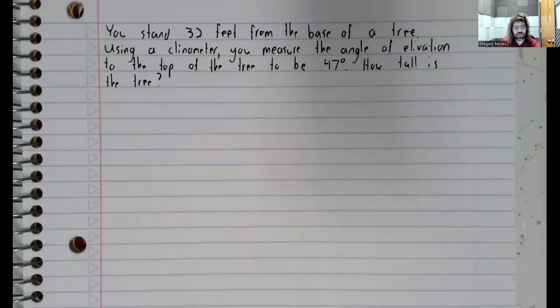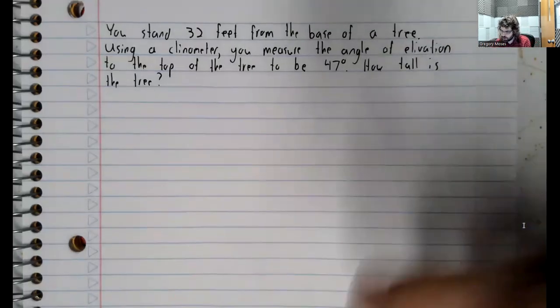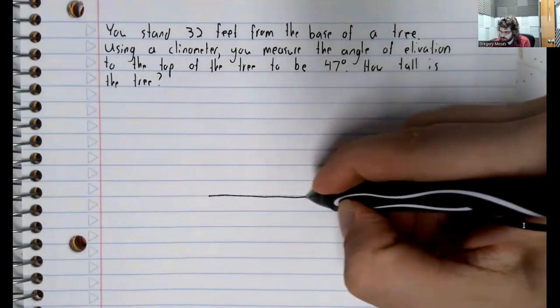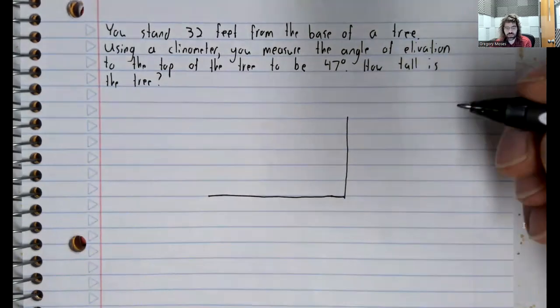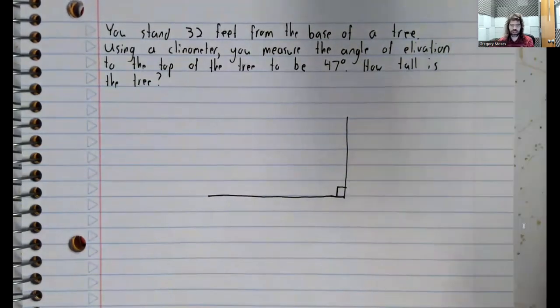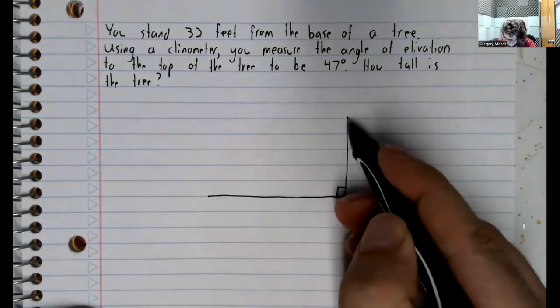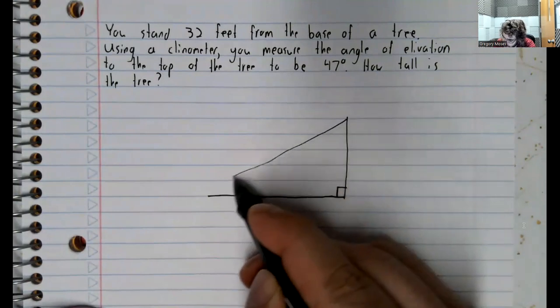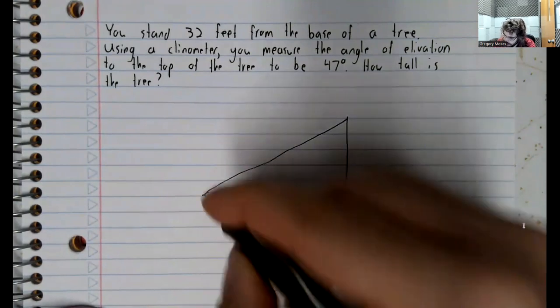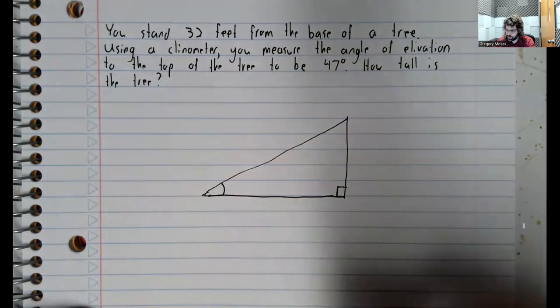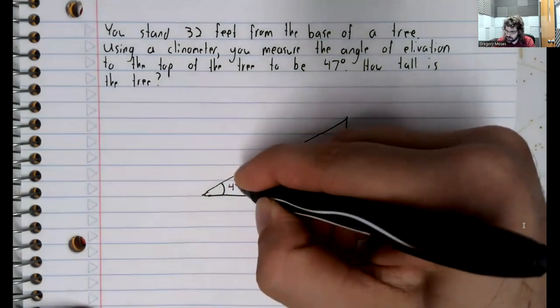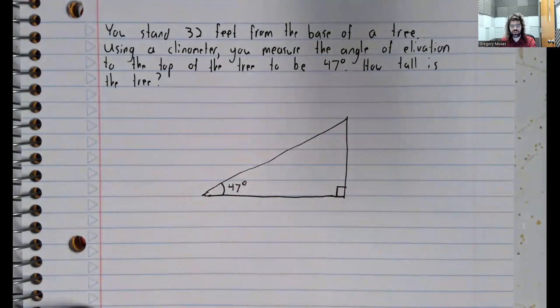Let's work out an example of this sort. We've got the ground, and we've got a tree growing out of the ground at a right angle. And if you use a clinometer, you can measure the angle of elevation. That's this angle. And let's say it's 47 degrees.